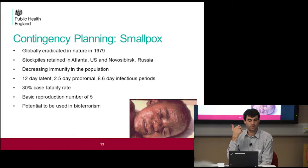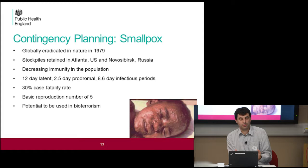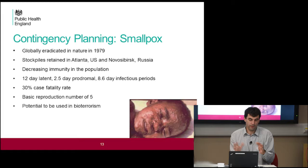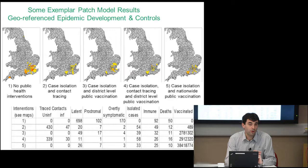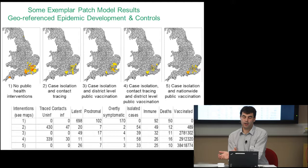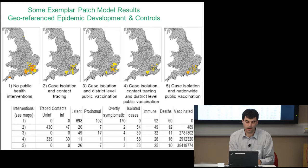Smallpox is a slightly more nuanced disease — it's eradicated, so arguably it's not a natural disease anymore, but there are still stockpiles. When there was concern those stockpiles might be compromised, we were asked to plan for a smallpox outbreak. It's a fairly nasty disease with a 30% case fatality rate. We built a slightly more complicated model that allowed for space — mixing at a home level and local authority level, with people moving around the country based on the commuter matrix from the census. This illustrates how we can bolt on different interventions: contact tracing, ring vaccination, and mass vaccination, looking at the benefits and costs of each strategy.